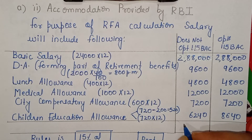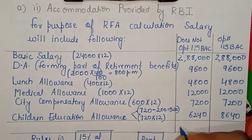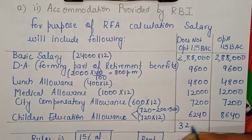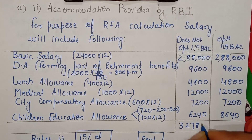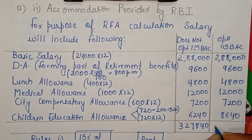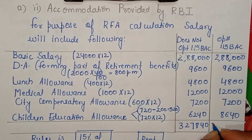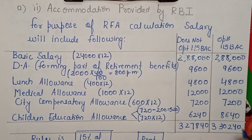The total salary for the purpose of computing 15%: without Section 115 BAC is 3,27,840, and with Section 115 BAC is 3,30,240.